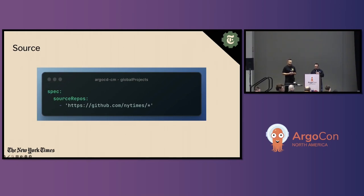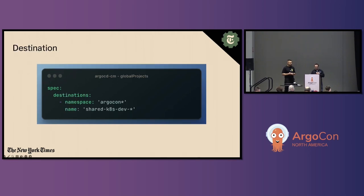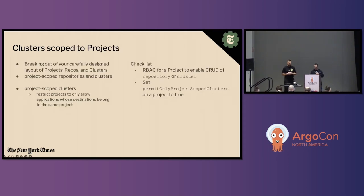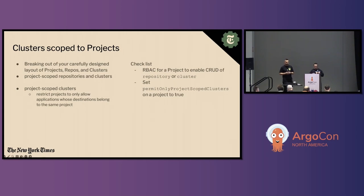Looking at source config in a project, utilize glob patterns in your project's sources. Ideally, all your application repositories are behind your organization or follow a certain naming pattern. Likewise for destinations, utilize glob patterns for namespaces and cluster names — this requires careful planning ahead of time for your platform to create namespaces and clusters that follow certain patterns. A newer feature is clusters and repositories scoped to projects, allowing a developer to add experimental or ephemeral clusters into your Argo CD platform. All these properties can be set declaratively in Kubernetes secrets.